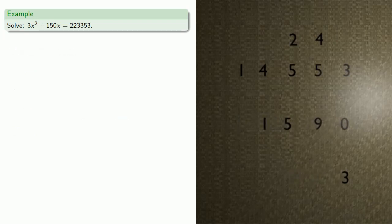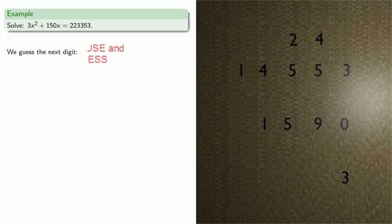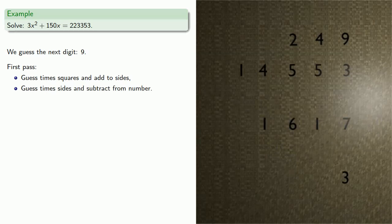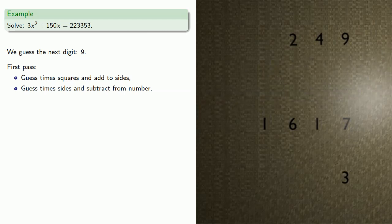Finally we'll guess our third digit, 9. We take our first pass: guess times squares and add to sides. Then guess times sides and subtract from number. At this point, since there is nothing left of the number, we have our solution: 249.